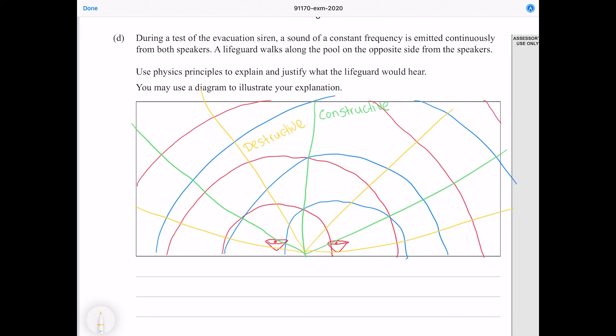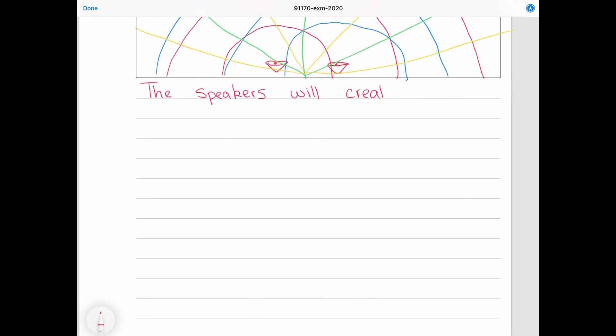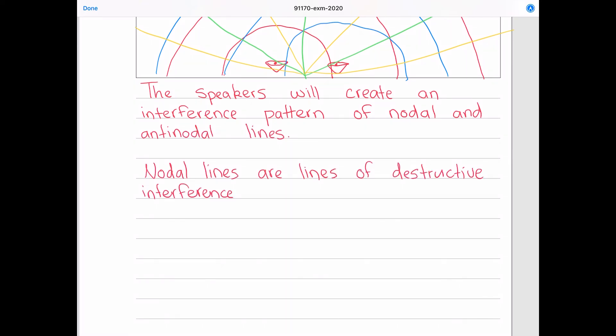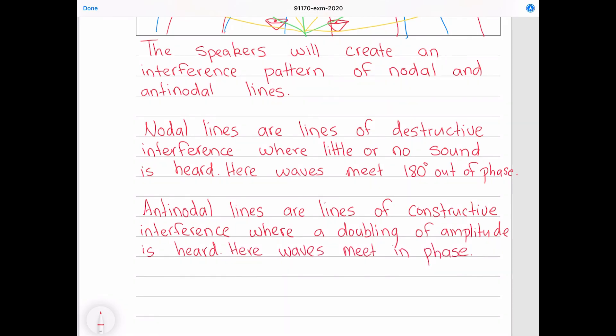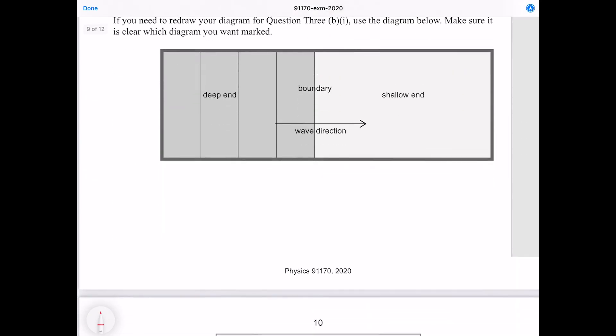Neglecting any reflections of course. So let's put that into words. The speakers will create an interference pattern of nodal and antinodal lines. Nodal lines are lines of destructive interference where little or no sound is heard where waves meet 180 degrees out of phase. Antinodal lines are lines of constructive interference where a doubling of amplitude is heard where waves meet in phase. As a result, the lifeguard will hear alternating quiet and loud areas. And that's it.